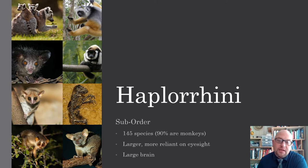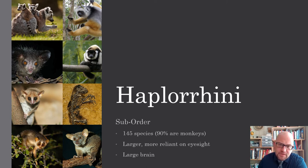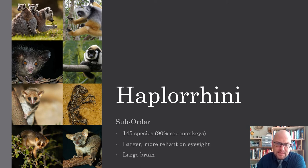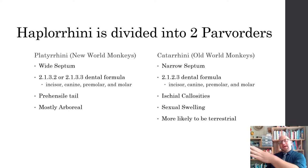Haplorhini is actually the suborder that we belong to — the other one in the order of primates — with about 145 species, 90% of which are monkeys. They have larger eyes and are more reliant on eyesight, and they typically have a larger brain as well. So Haplorhini is what we belong to.